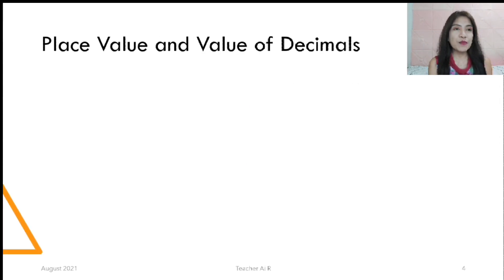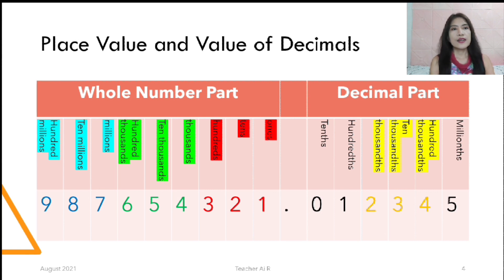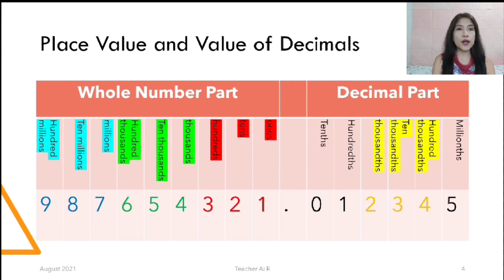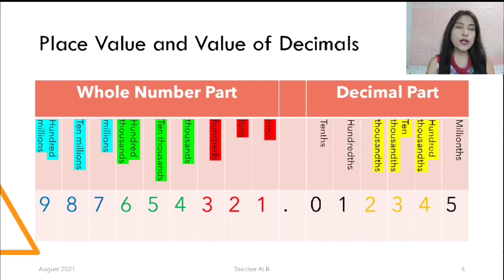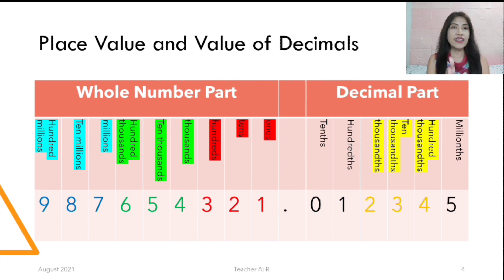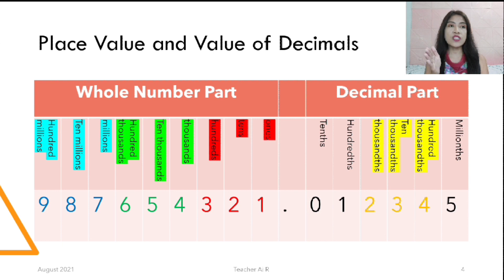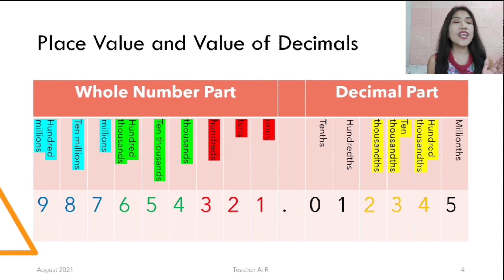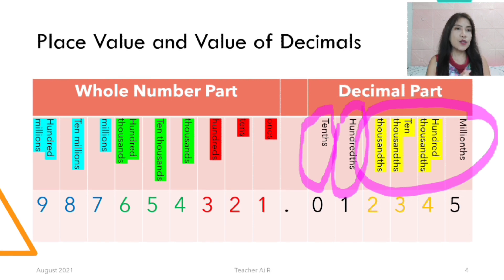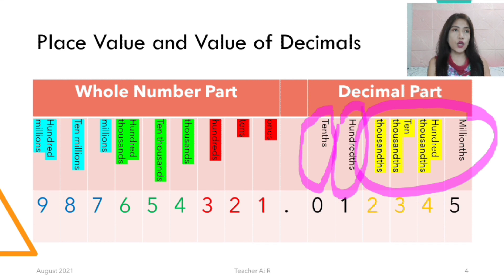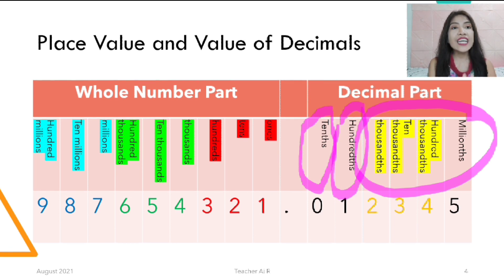So let's have the place value and value of decimals. The value of a decimal is different from the whole number. If you could see, we have the whole number part and the decimal part. For the whole number part, we start from ones, tens, hundreds, thousands, ten thousands, hundred thousands, millions, ten millions, hundred millions, billions, and so on. The decimal part has no ones — only the whole number part has ones.